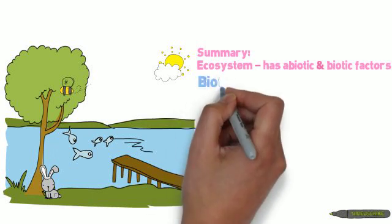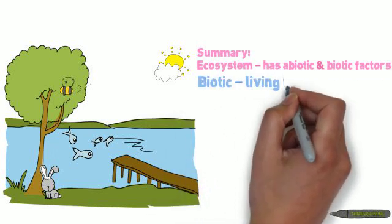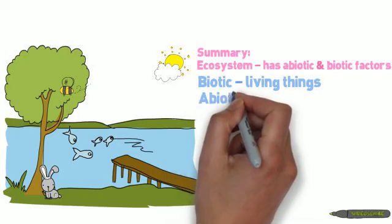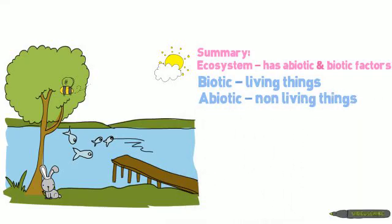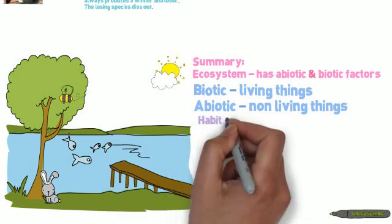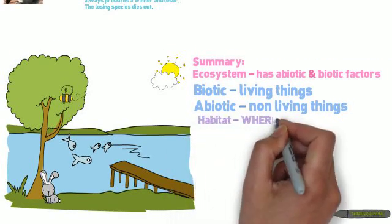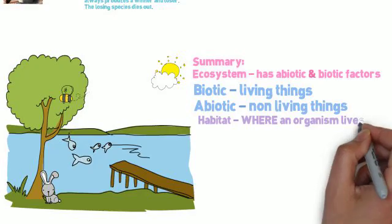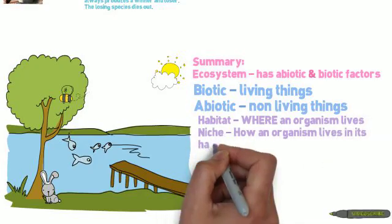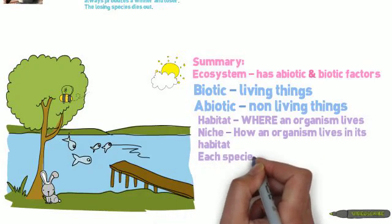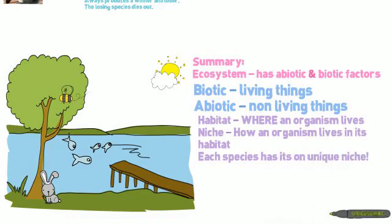Bio means living or life, so biotic factors are the living things within that area. And 'a' means not or without, so abiotic factors are the non-living things of that area. A habitat is where an organism lives, while a niche is how an organism lives in that area. And remember the most important thing: each species has its own unique niche. Two species cannot occupy the same niche for very long.